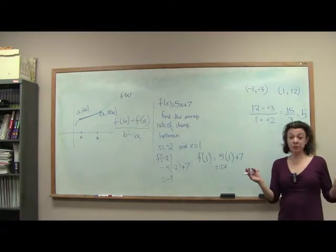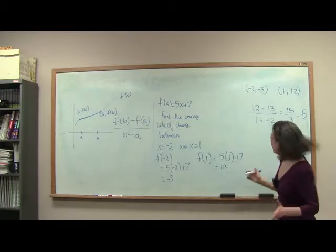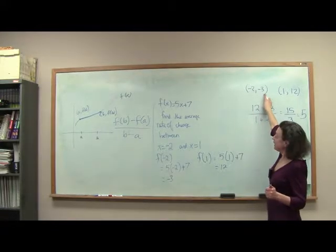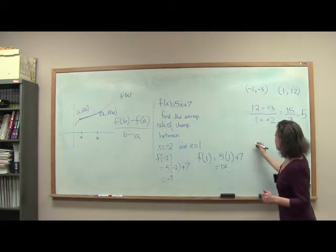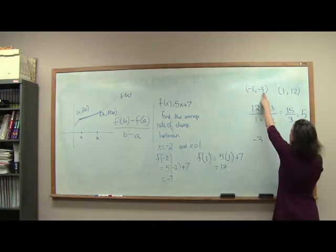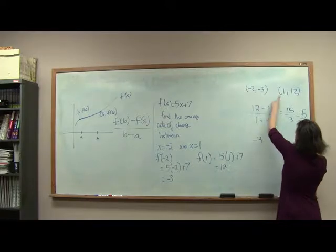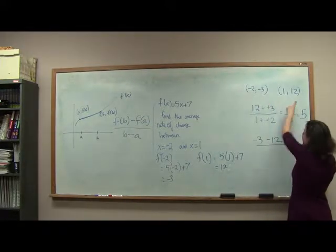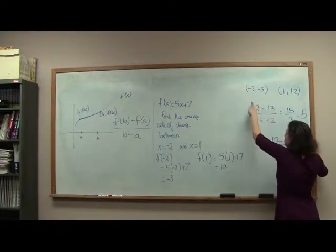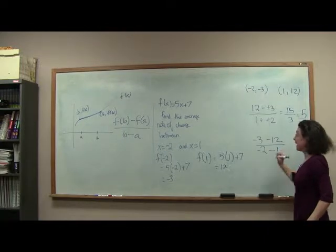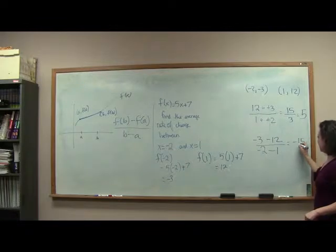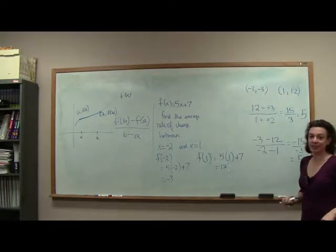A reasonable question to ask is: why did you start with 12? Couldn't you have started with the other value? Absolutely — the thing is we have to keep consistent. If someone wanted to start with function value negative 3 and then do minus 12, that's totally fine. But if you start with this Y value in the numerator, be sure you start with its corresponding X value in the denominator. You'll see you get the same thing: negative 15 over negative 3, and you still get 5.